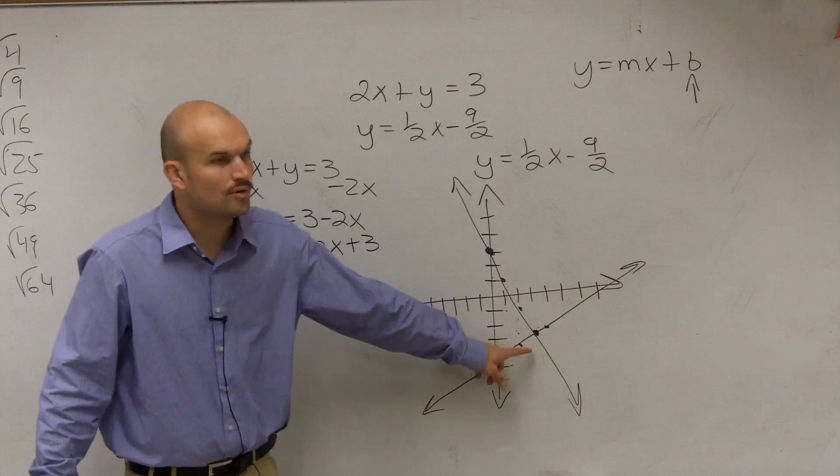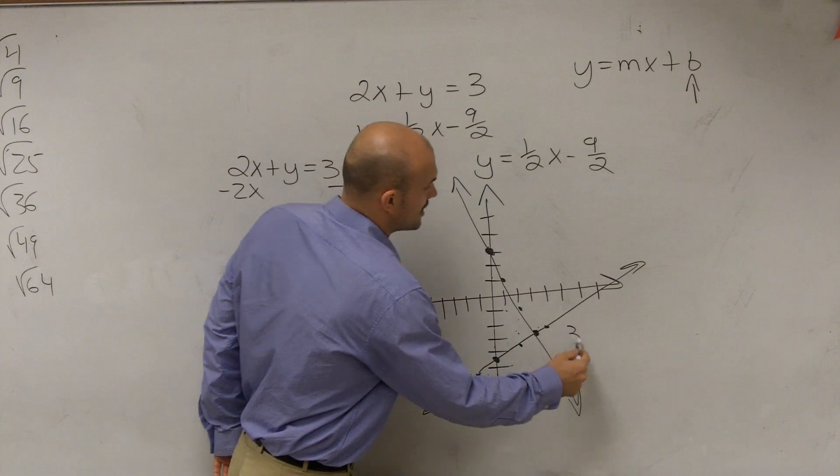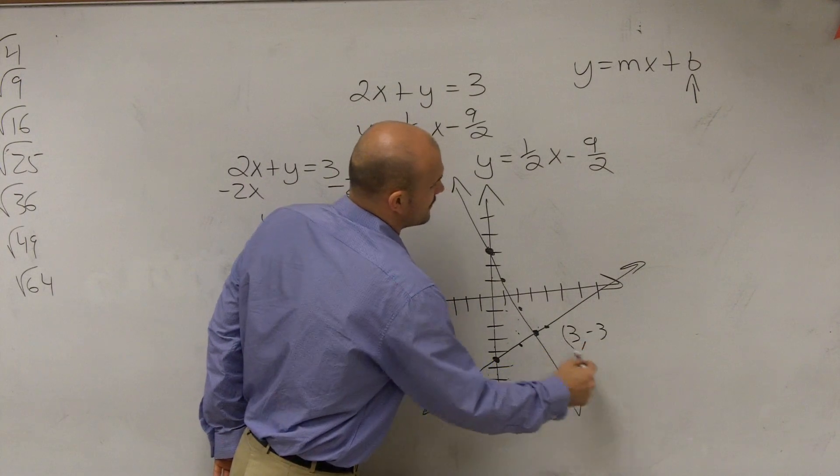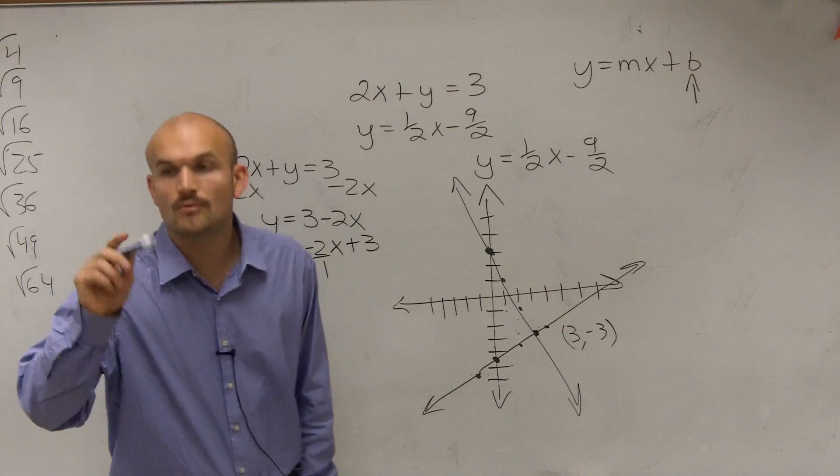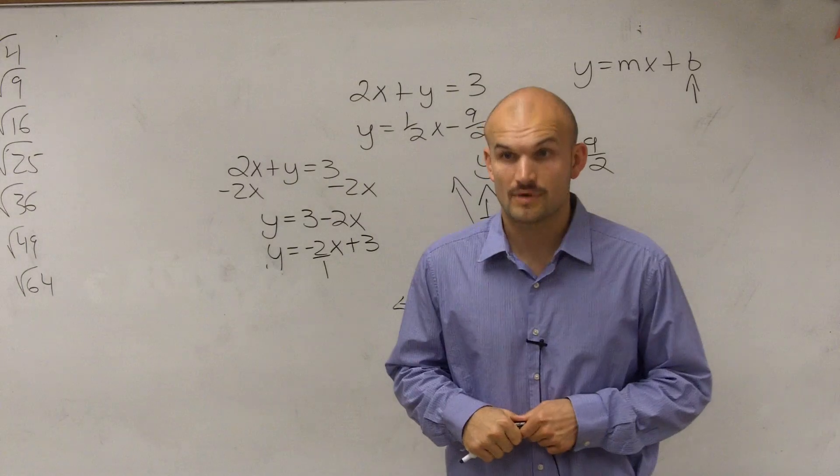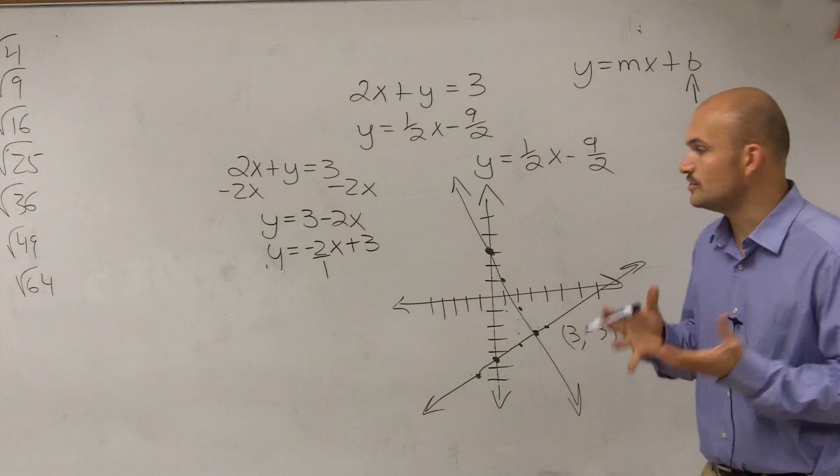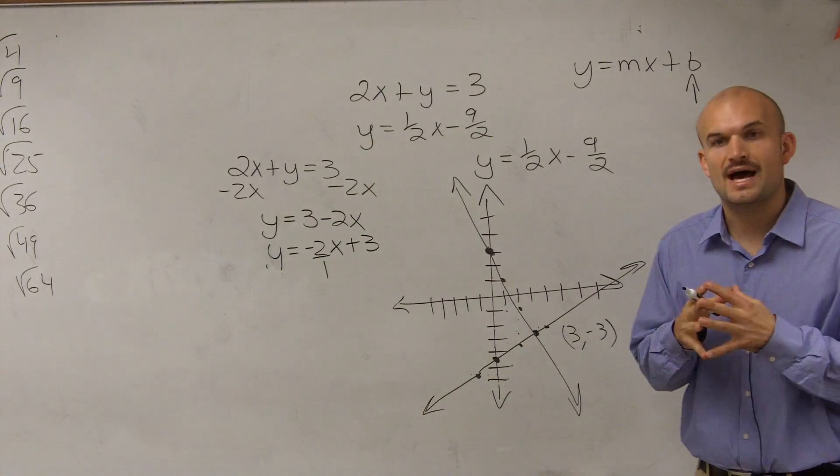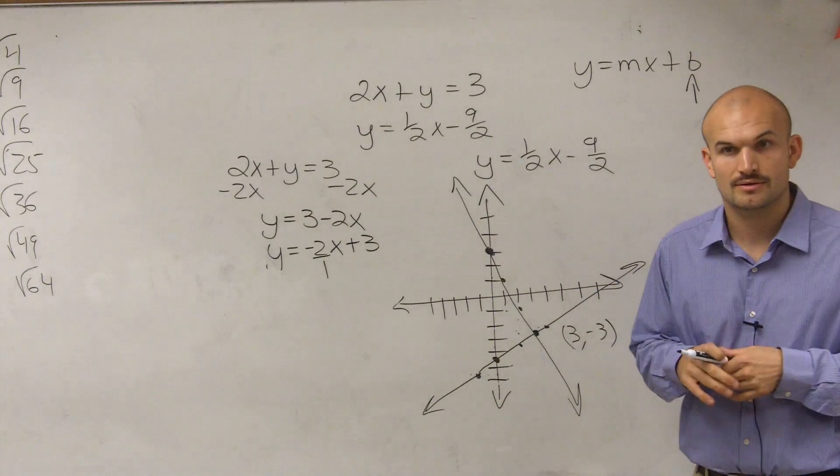And then we look at this point, this intersection point. Where is this intersection point? So you could say at 3 comma negative 3. You're right. What does the question ask? It says solve, right?